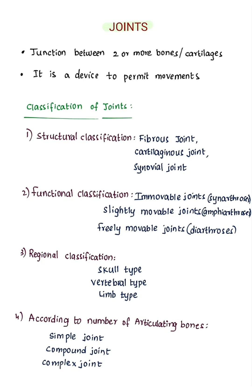Functional classification is based upon the degree of mobility of joints. Immovable joints are called synarthrosis — no mobility is present, example: sutures of skull. Slightly movable joints are called amphiarthrosis — some degree of mobility is present, example: intervertebral disc. Freely movable joints are called diarthrosis — wide range of mobility is present, examples: shoulder joint, hip joint, knee joint.